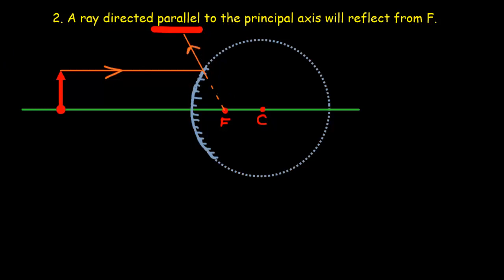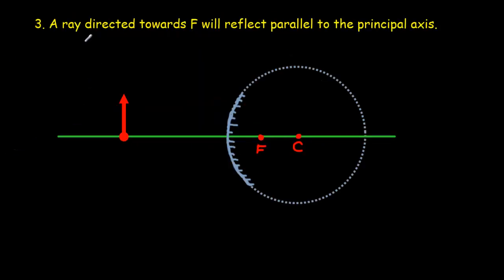Third rule. If the ray is directed at F, so let's do a ray that's directed at F. We're going to aim our ray straight at F. If we do that, it's supposed to reflect off parallel to the principal axis. So the reflection occurs right at the surface of the mirror.